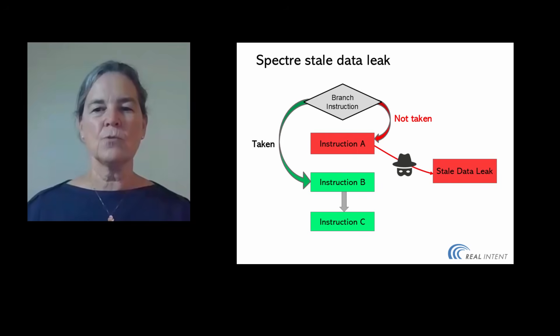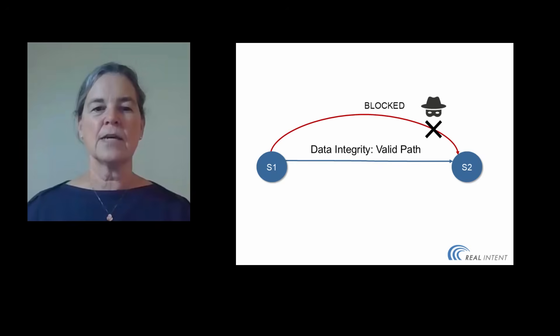Now, let's look at three general types of hardware security checks. First, data integrity. Designers can ensure that data transfers between secure domains occur without corruption. In the graphic shown, S1 and S2 are secure domains. Designers can test for the integrity of authorized transfers and for potential blocks to pass.